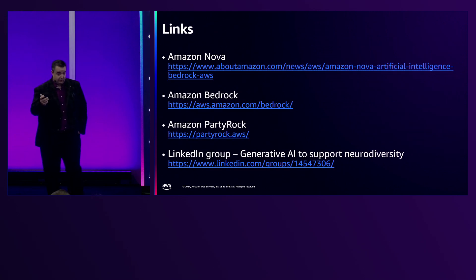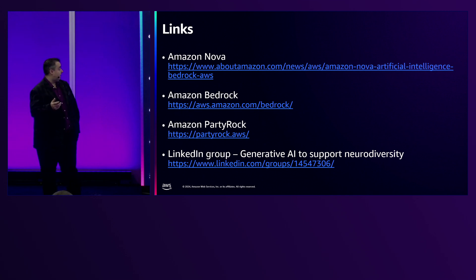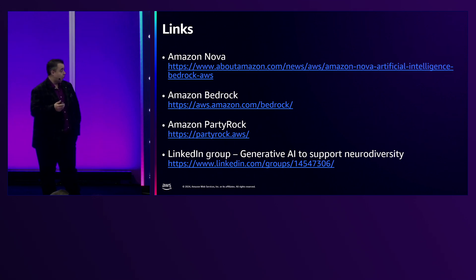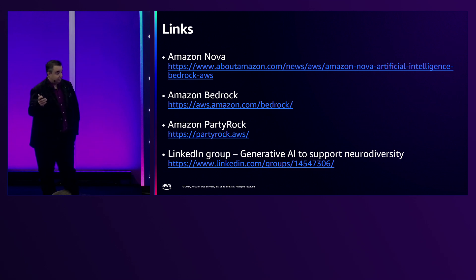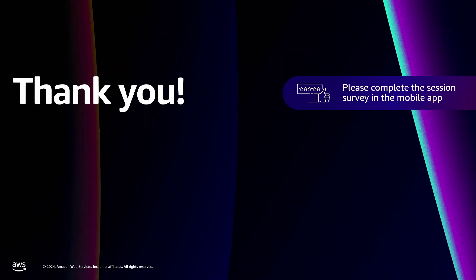Some links to take away: Amazon launched Amazon Nova, one of our own generative models this week. Amazon Bedrock, the foundation that we build on. Amazon Party Rock, a ready-to-go offering from AWS. And the bottom link — if anyone would like to connect, we're trying to build a community of people in this space talking about AI for neurodiversity. Thank you so much for your time, and I really hope you enjoy the rest of your re:Invent.